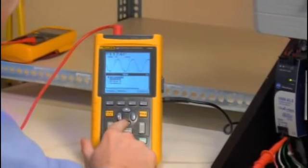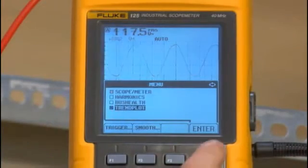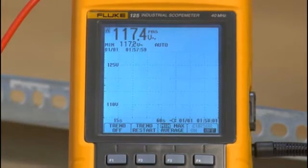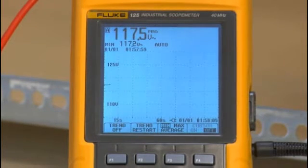If we don't see anything right away, we'll use the Scope Meter's trend plot mode to capture the input over time. Now we can go about our job while the oscilloscope does its job. If there's a disturbance, the Scope Meter will capture it and plot it just like a paper chart recorder, telling us the time and magnitude of the problem.